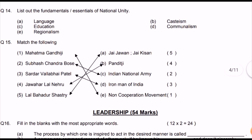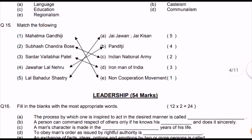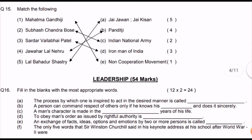List the fundamental essentials of national unity: language, education, regionalism, casteism, and communalism. Match the following: Mahatma Gandhi — Non-Cooperation Movement; Subhas Chandra Bose — Indian National Army; Sardar Vallabhbhai Patel — Iron Man of India; Jawaharlal Nehru — Pandit Ji; Lal Bahadur Shastri — gave the slogan 'Jai Jawan Jai Kisan.'